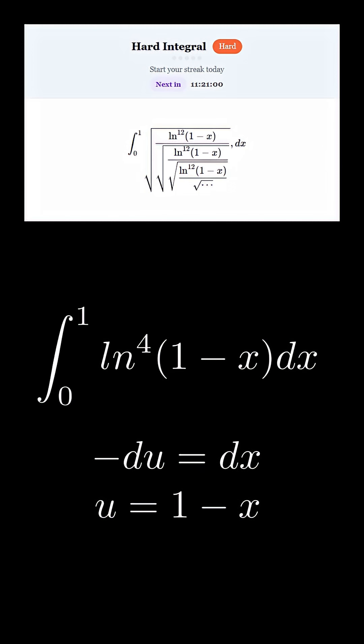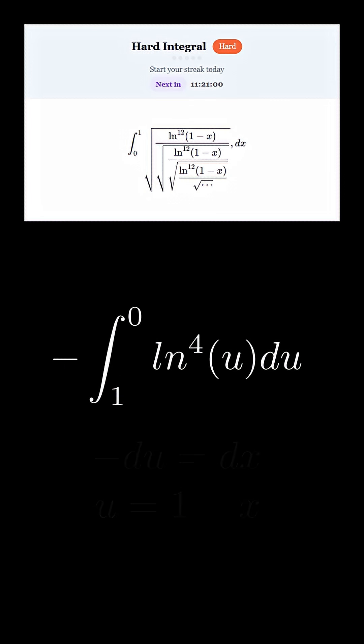And for our bounds, plugging in 0 as x gives 1, and plugging in 1 as x gives 0. Now let's plug everything in. And the negative switches the bounds.